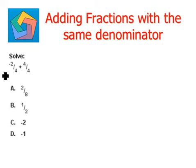The first one says solve negative 2 fourths plus 4 fourths. Let's write down our problem, negative 2 fourths plus 4 fourths. Now here we see in the first and the second fraction the denominator is same. The rule is very simple.